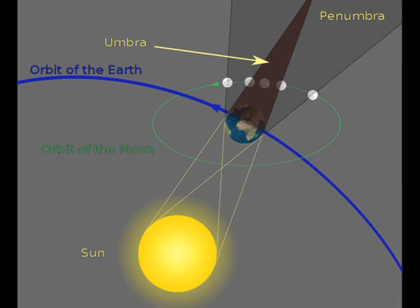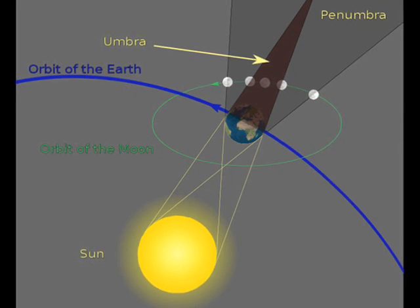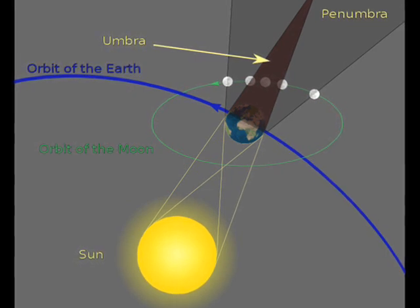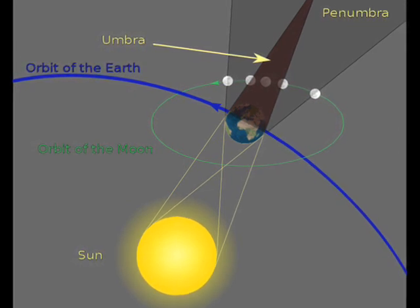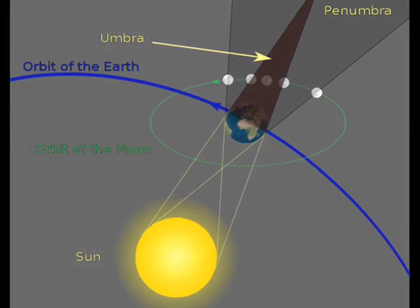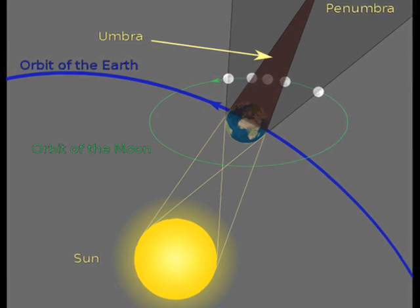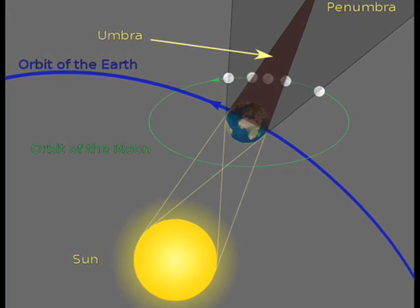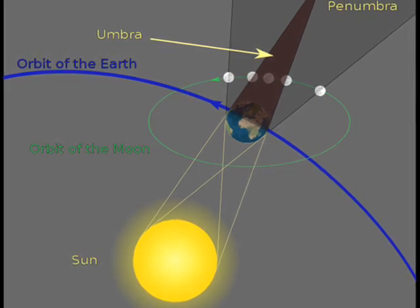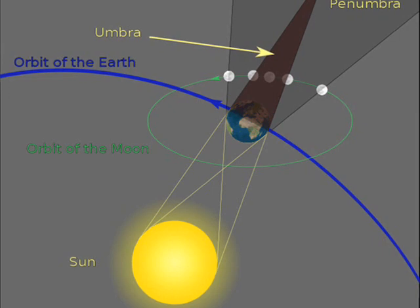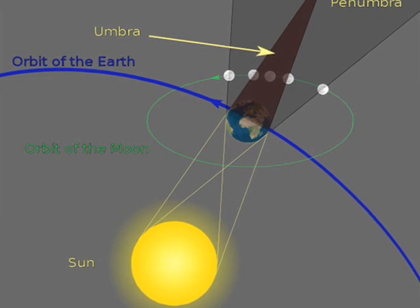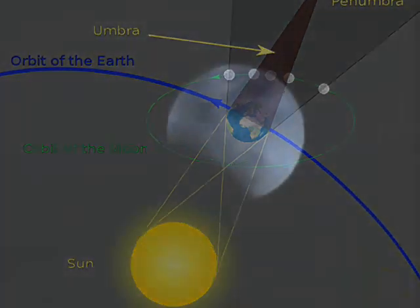The ombra of the Earth's shadow has a length of 1.4 million kilometers and points away from the Sun. The ombra at the position of the moon has a diameter of 9,000 kilometers. The penumbra at the same distance has a diameter of 16,000 kilometers.